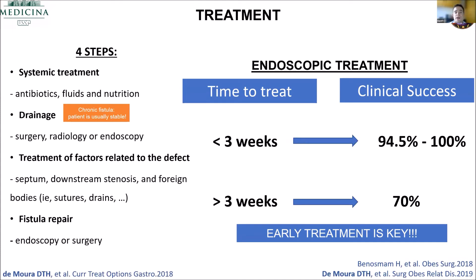To treat these patients, when you have a leak, usually it's in the early period after surgery. We need to do systemic treatment, we need to drain the patient, and also treat the factors related to the leak. The most important thing I consider is that endoscopic treatment should start early. It's very common for surgeons to try to treat these patients, do a revisional surgery, place a nasojejunal feeding tube, and never ask for endoscopy.